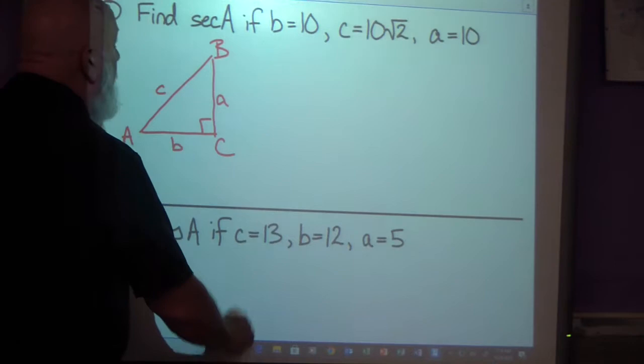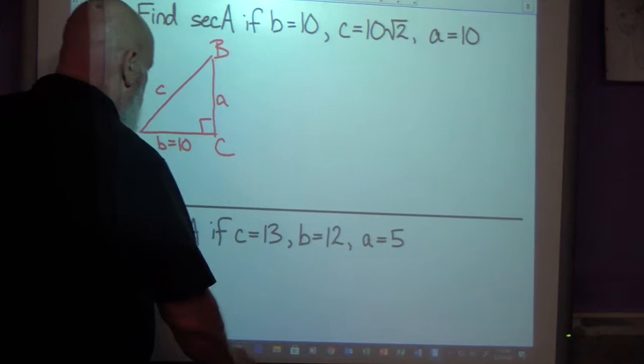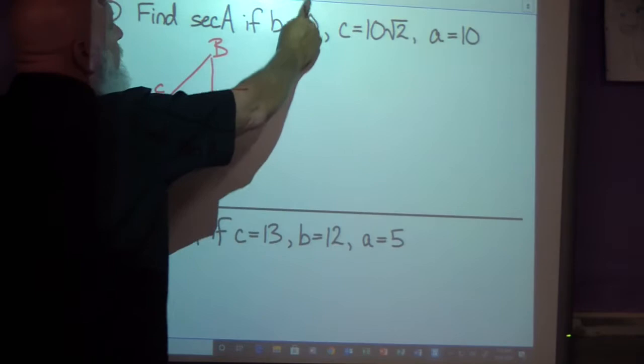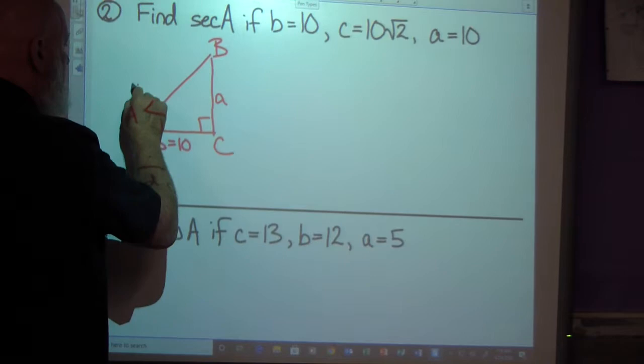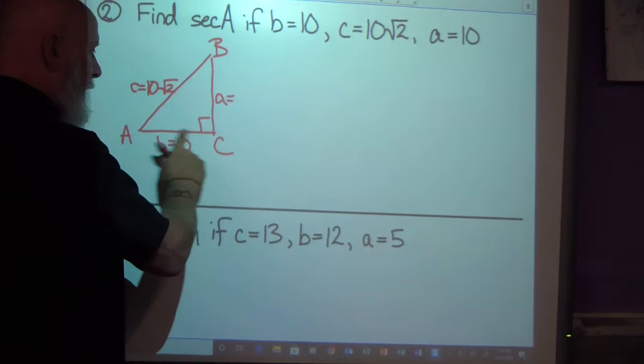Erase that so I can move it a little bit. B equals 10. C is equal to 10 radical 2. This one probably won't move either. Of course it won't. C is equal to 10 radical 2. That's pretty sloppy. And A is also 10. What do you know? That's an isosceles triangle. This is pretty close to scale.